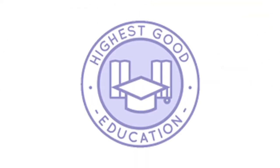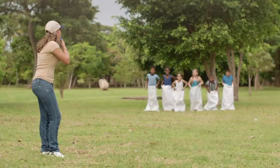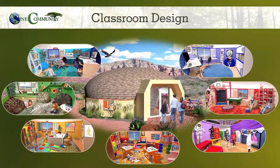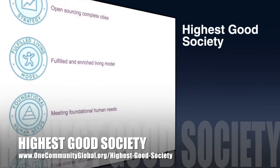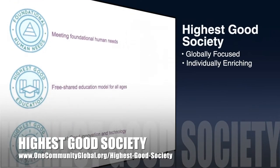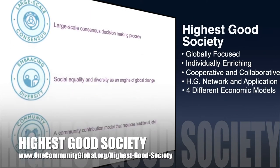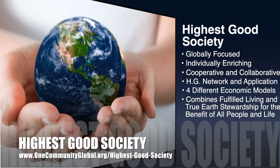The next component is highest good education. This component is complete and pretty much ready to launch once we're on the property. One Community's approach to highest good education is designed for all age groups, adaptable to any schooling environment, inspiring and fun for all participants, and includes national standards, all subjects, lesson plans, teaching strategies, learning strategies and tools, classroom design, and more. One Community's approach to highest good society is globally focused, individually enriching, cooperative and collaborative, includes a highest good network and application, four different economic models, and combines fulfilled living and true Earth stewardship for the benefit of all people and all life on this planet.